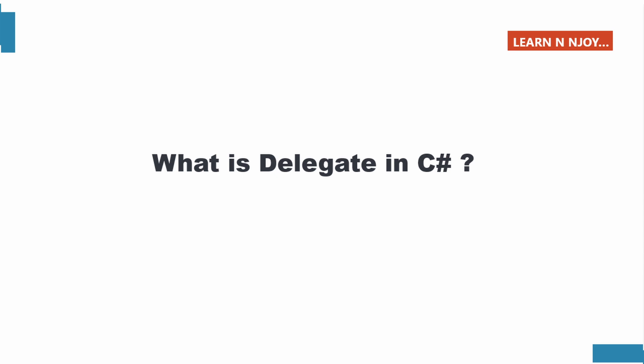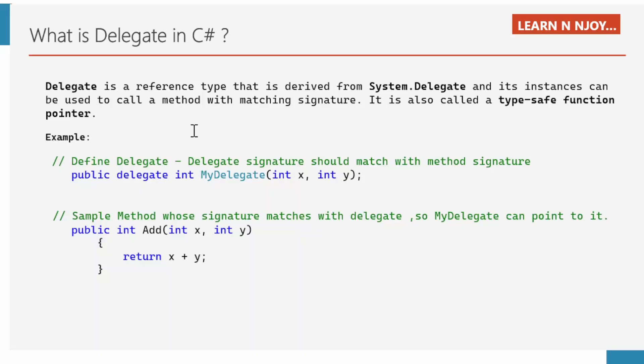What is a Delegate in C#? A Delegate is a reference type that is derived from System.Delegate, and its instances can be used to call a method with a matching signature. Let's understand this with the help of an example.